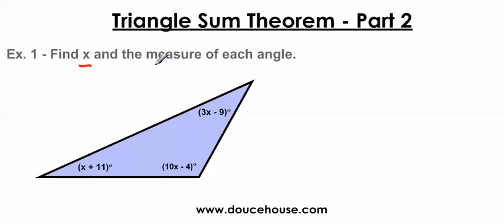So find x and then also find the measure of each angle. We need to find x first because I can't find the angle measures until I find x. I need to use the idea that all these angles are always going to equal 180 degrees. This is very important. This is the only way I know how to solve this problem.